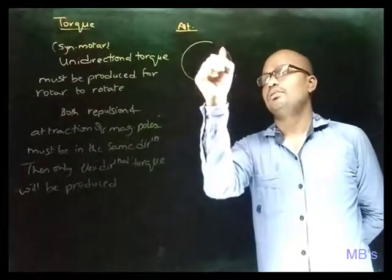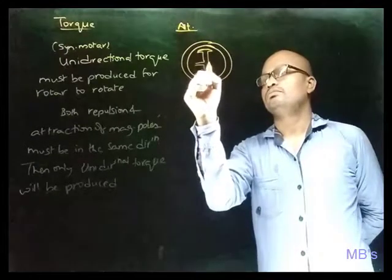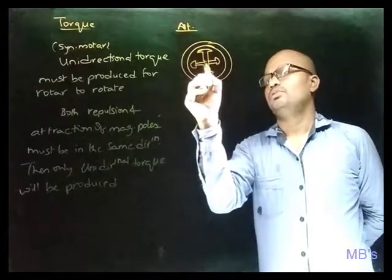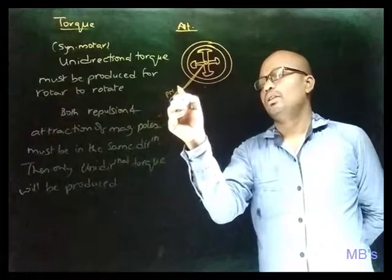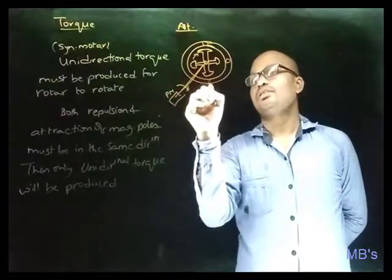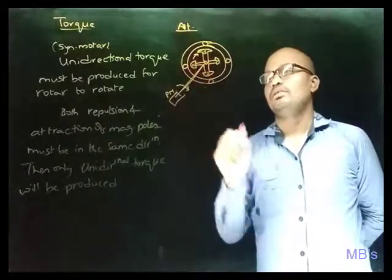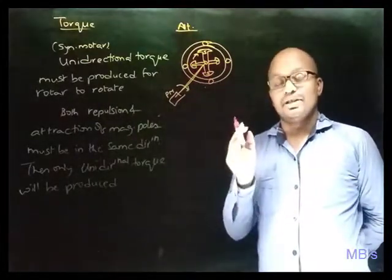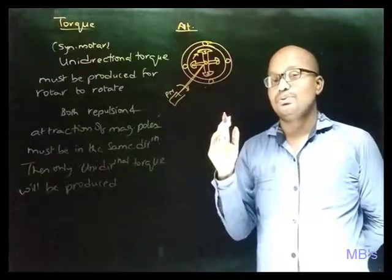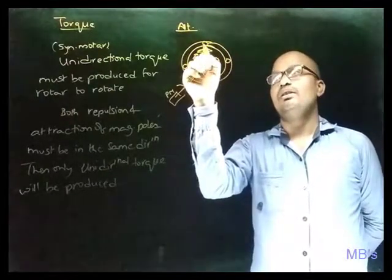Let us consider a four-pole salient pole alternator whose input is given by a prime mover rotating in the clockwise direction, so the rotor also rotates clockwise. Let us suppose these are the conductors. Let this be south pole, this be north, south, and north. By applying Fleming's right-hand rule, find the direction of induced EMF in the conductor. To find the direction of induced EMF, we need the motion direction and field direction. The field direction is downwards because it is a south pole.